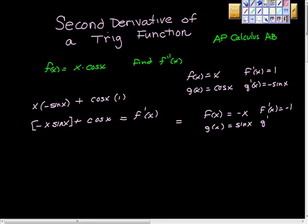I'm going to fill in the blanks here. I'm going to get negative x times cosine x plus sine x times negative 1. And that is the derivative of this.